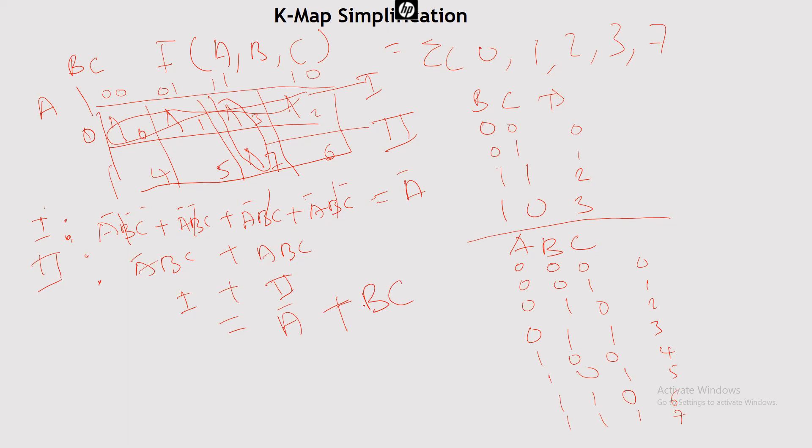Adding group 1 and group 2 together, we get our final answer: Ā + BC. You can see how easy it is to use the K-map to simplify Boolean algebra. You can do this even for five-variable expressions. It's a very interesting concept.